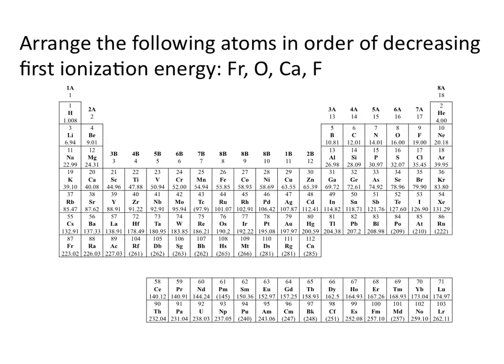First, let's locate these elements on the periodic table: francium, oxygen, calcium, and fluorine. Remembering our periodic trends that ionization energy increases as you go from the bottom to the top, and increases as you go from left to right.